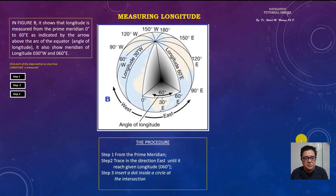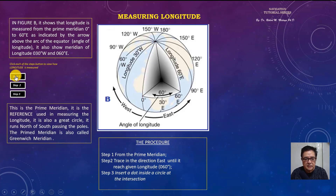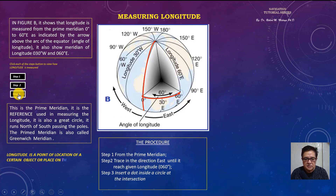Measuring longitude. In figure B, it shows that the longitude is measured from the prime meridian, 0 to 60 degrees east. The same procedure applies, but this time starting from the prime meridian. Step one, start at the prime meridian. Step two, trace to the given direction. Step three, mark the intersection as the point of longitude.